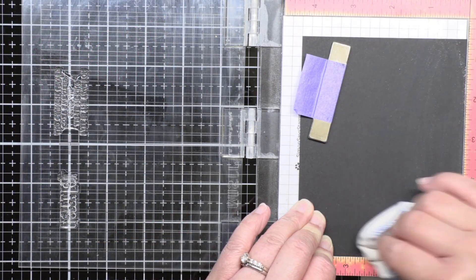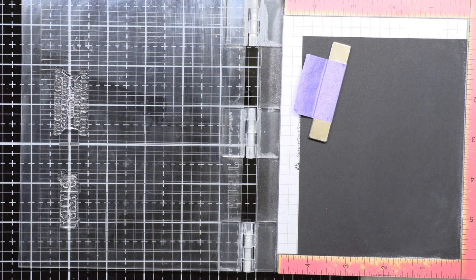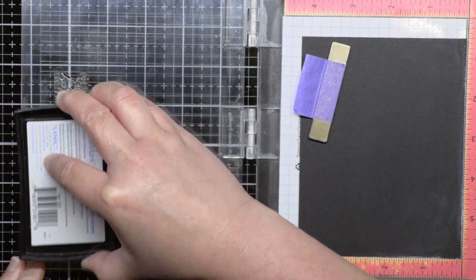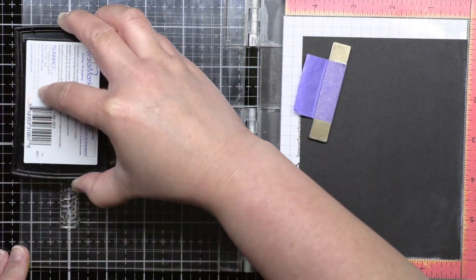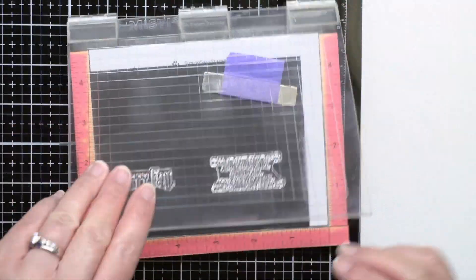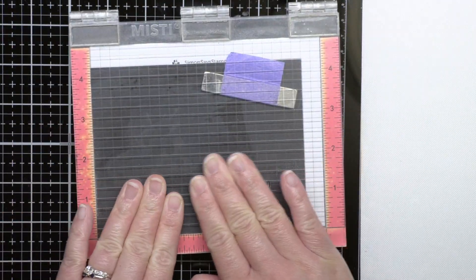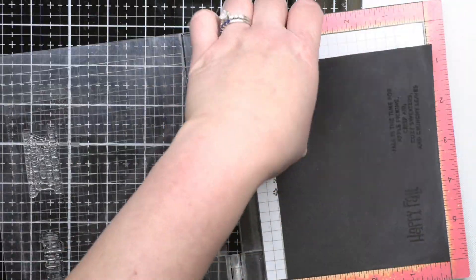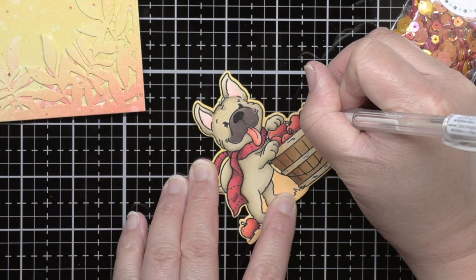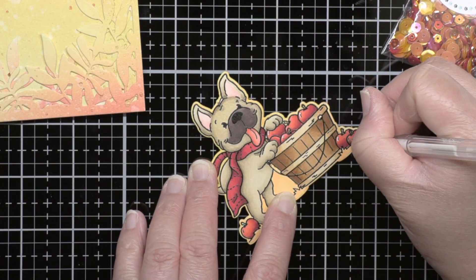While that was drying, I stamped the sentiments from Fall Frenchie onto black cardstock with Versamark and heat embossed them with gold embossing powder before trimming them down to thin labels. I also added accents to my Frenchie with a white gel pen.